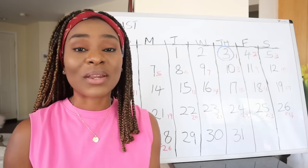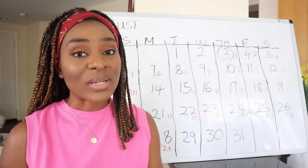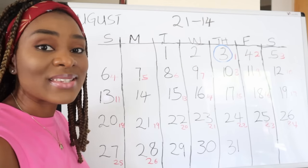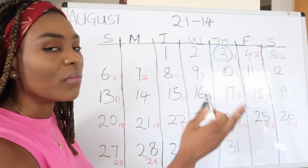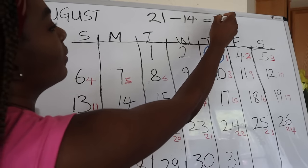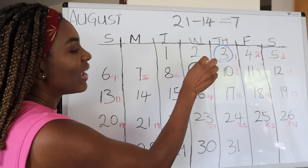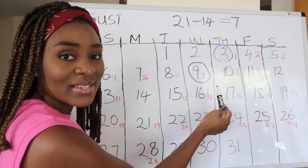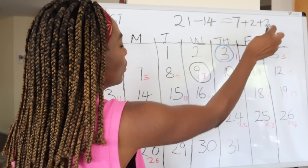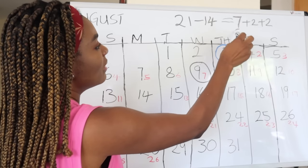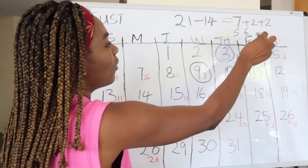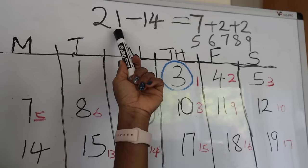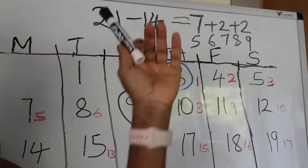Now for bonus calculations for every cycle length. For a 21-day cycle: 21 minus 14 equals 7, so day 7 is your predicted ovulation day. Add the two days in front — days 5 and 6 — and the two days after — days 8 and 9. So for a 21-day cycle, days 5, 6, 7, 8, and 9 are your fertile window, with day 7 being your predicted ovulation day.